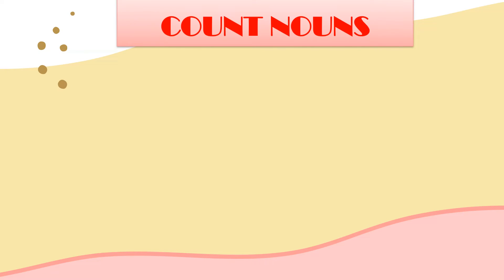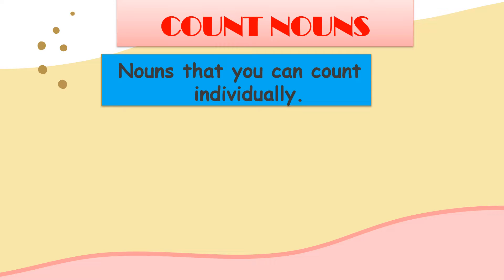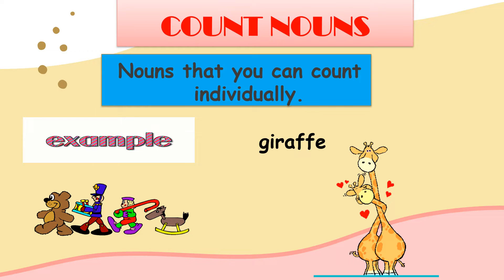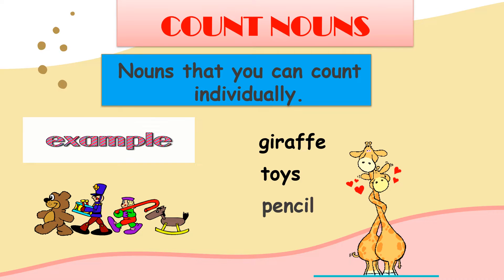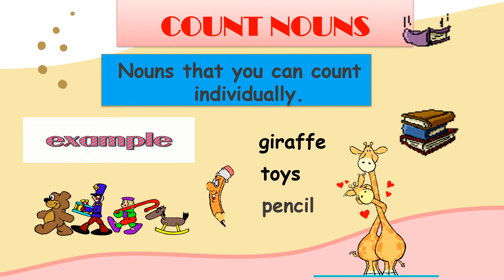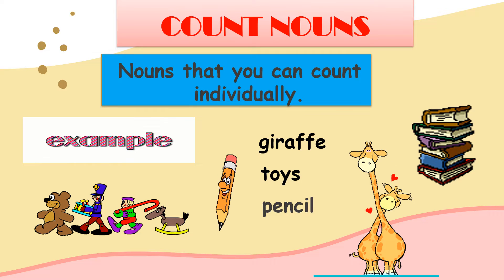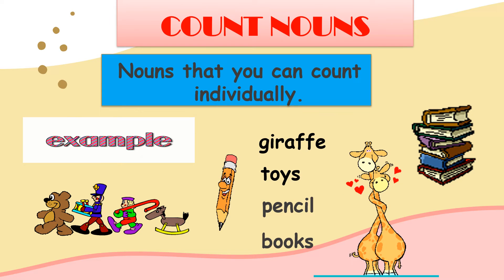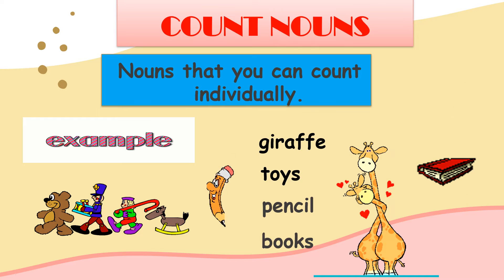Now let's begin with what we call as count nouns. Count nouns are basically the nouns that you can count individually. Examples of count nouns: animals as big as a giraffe, or things just like toys, or a pencil, or books. So just remember, count nouns are basically the nouns that you can directly count one by one, and these are the nouns that come with a plural form.